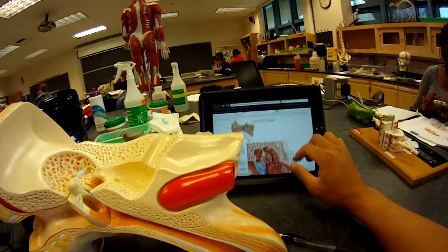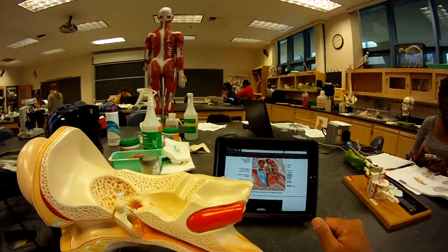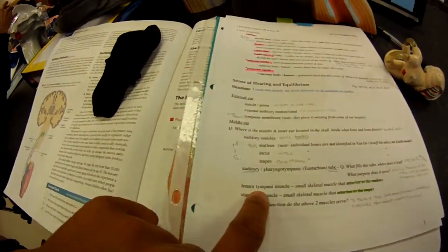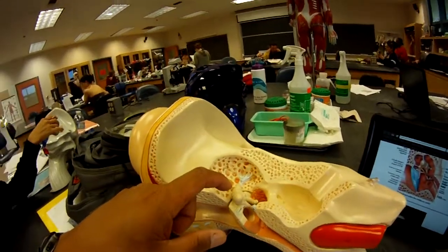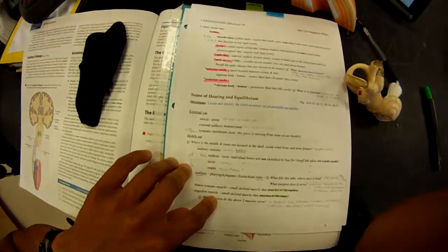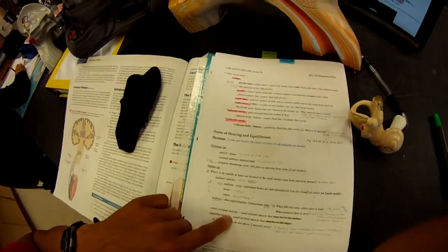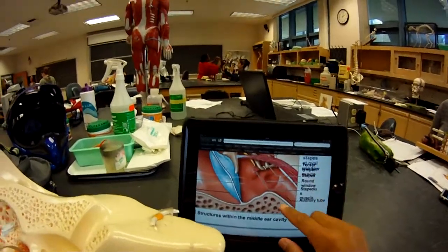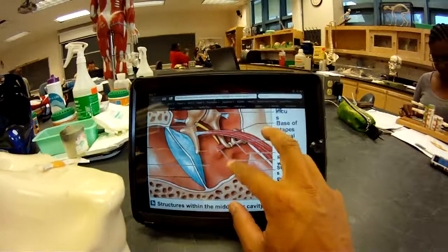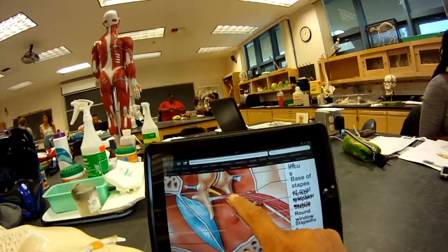There's two muscles: one called the tensor tympani muscle and a stapedius muscle. This one attaches to the malleus, and the stapedius muscle is the super itty-bitty muscle in the ear. So here's the stapedius muscle and this is the tensor tympani muscle.